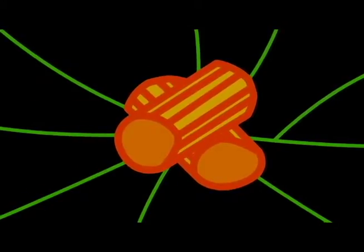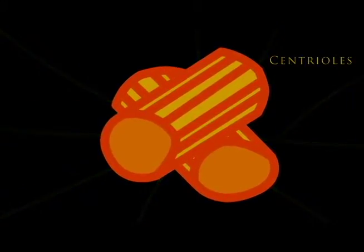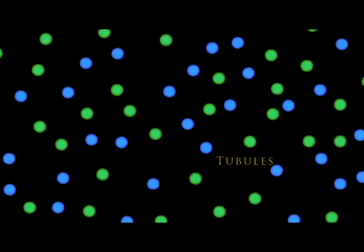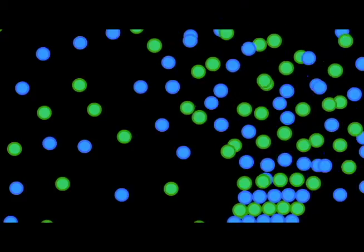The centrosome contains centrioles in eukaryotic cells, as well as a high concentration of particles known as tubules. It is in this location that microtubules are both broken down and formed.